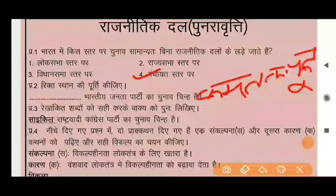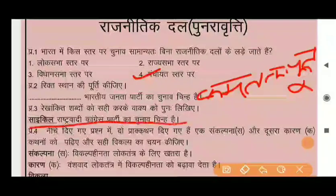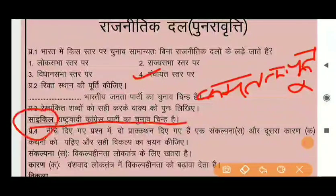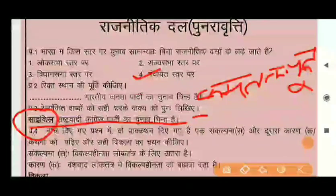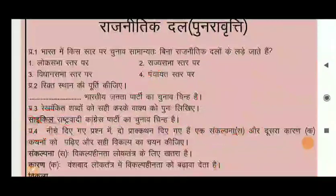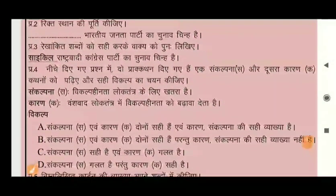Question 3 says: rikh anon ke shabdon ko sahih karke vakya ko punah likhiye — correct the underlined word and rewrite the sentence. The sentence says: Rashtriya Congress Party ka chunav chinh cycle hai — but Rashtriya Congress Party's symbol is not a cycle, it is a ghadi — a clock. So replace 'cycle' with 'ghadi'. That is the correct answer.